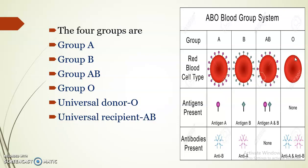In group O, the RBCs do not possess A or B antigens — antigens are absent — but they have both anti-A and anti-B antibodies. Since group O doesn't have antigens, they can donate blood to all groups, so they are considered universal donors. Group AB lacks antibodies, so it can receive blood from all other groups and is considered the universal recipient.